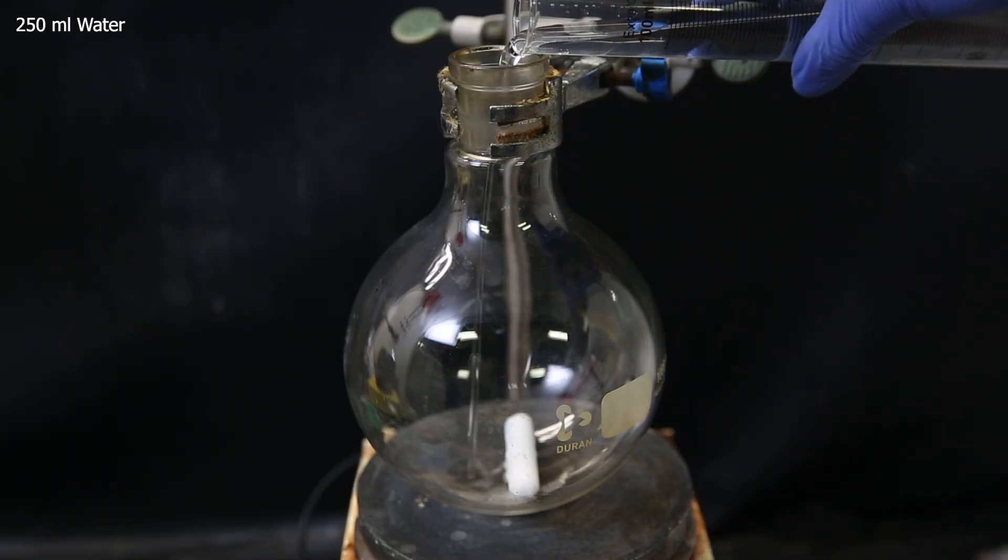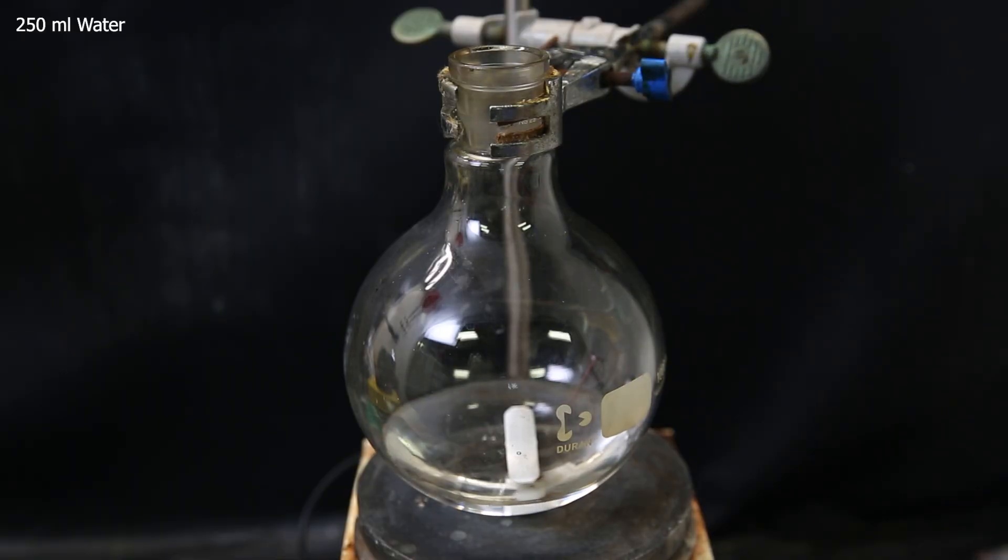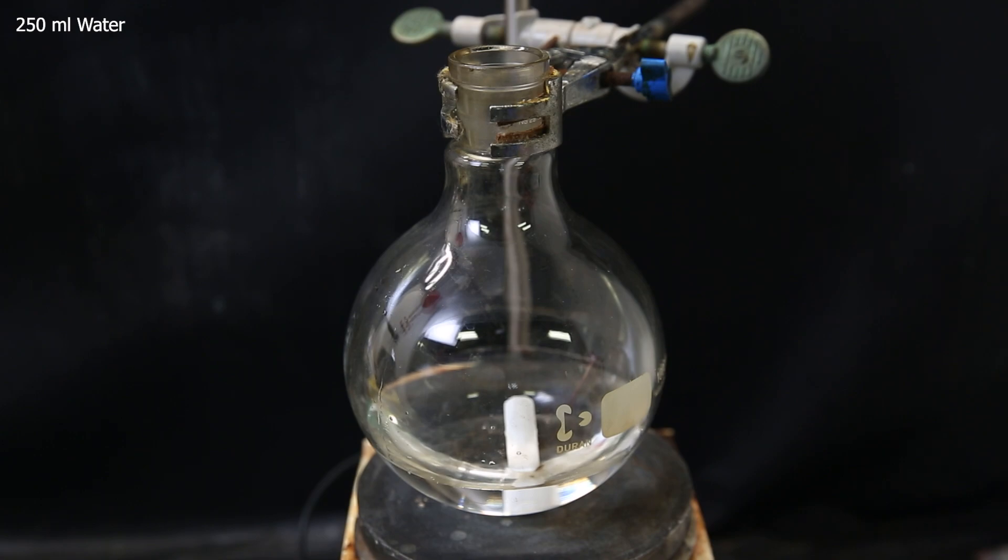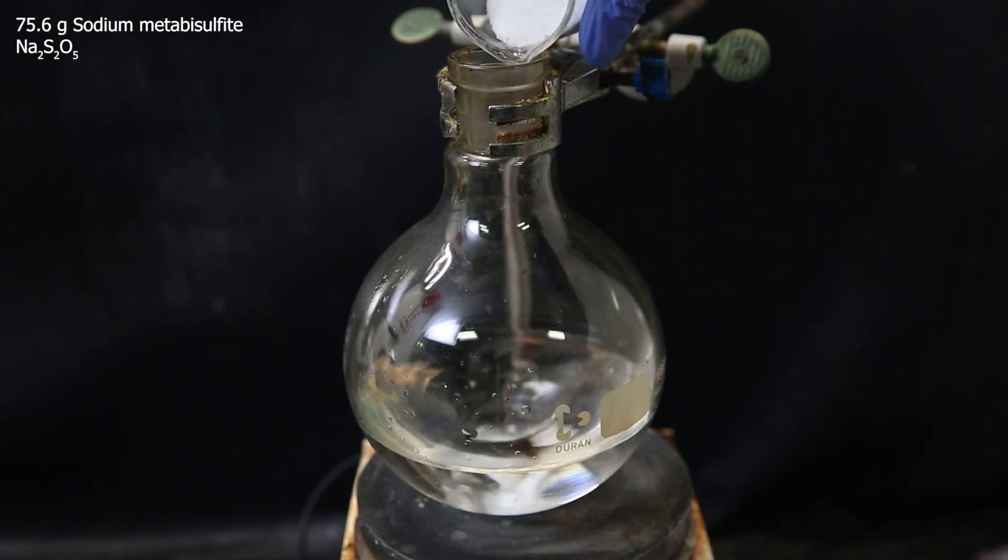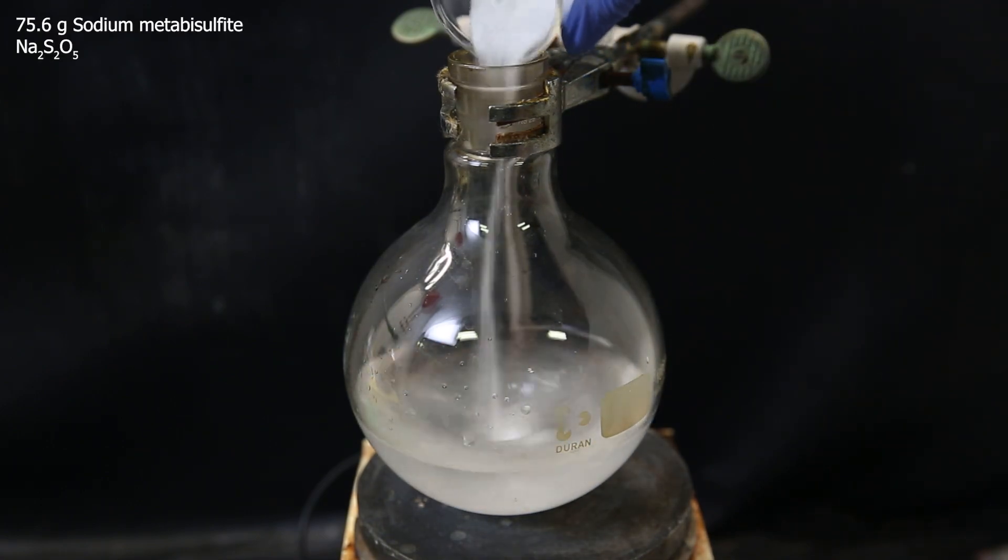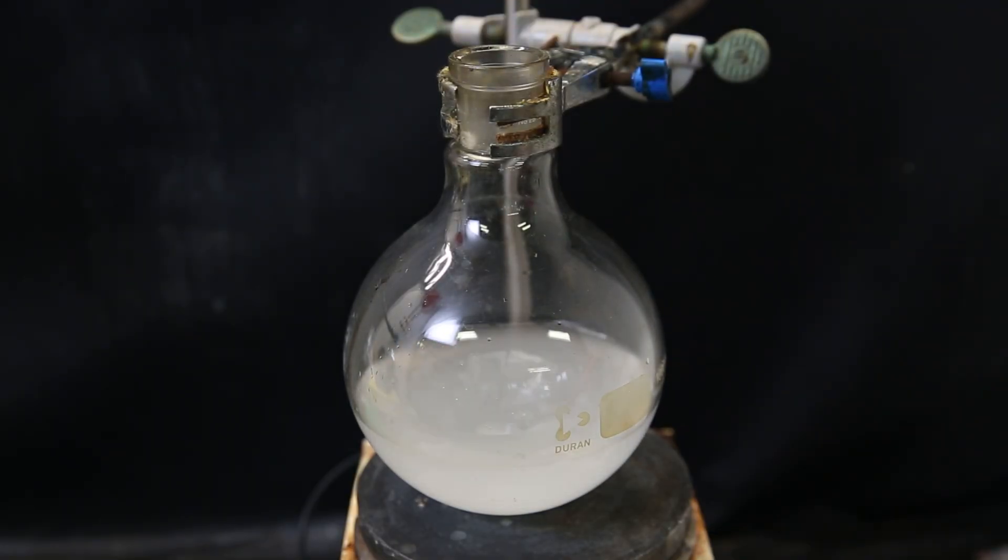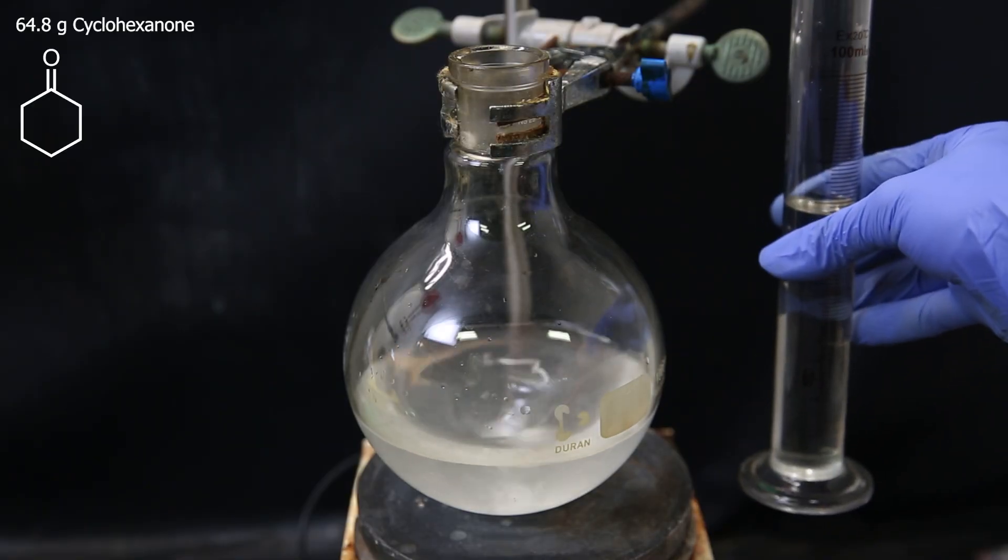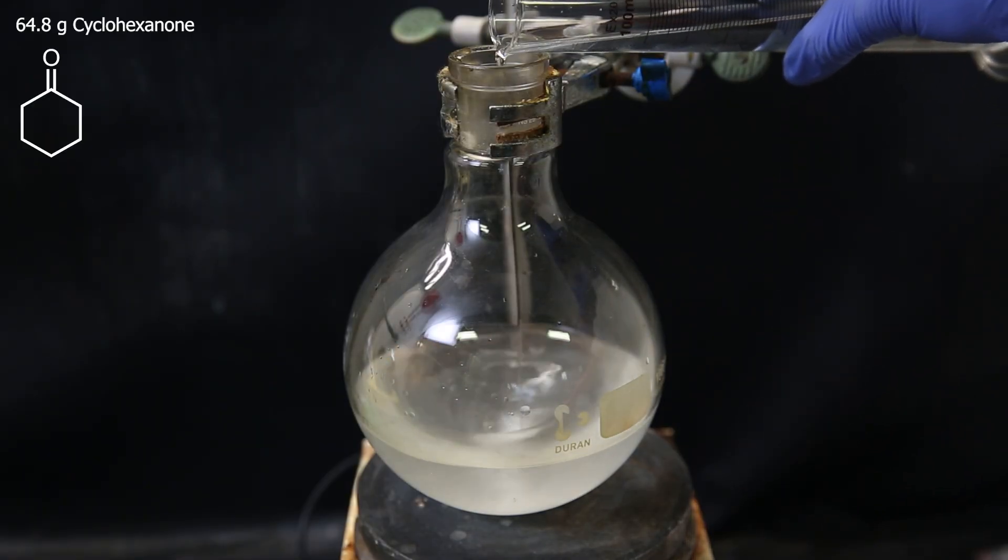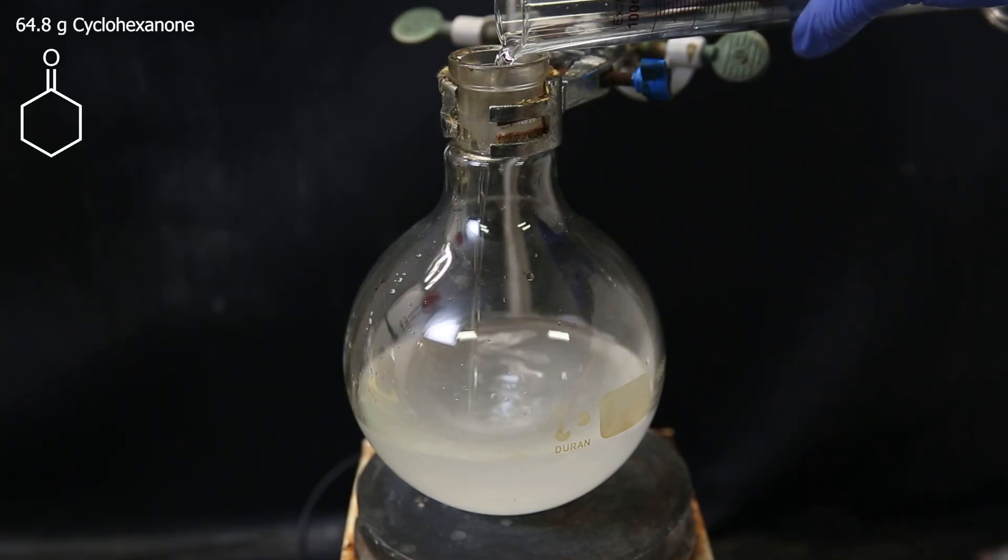So to get started, I set up a large flask with a stir bar, and add in 250 ml of water as a solvent. Into this, I add 75.6 grams of the salt sodium metabisulfite, which will dissolve and form bisulfite ions. When it has dissolved, I add in 64.8 grams of the reagent cyclohexanone.